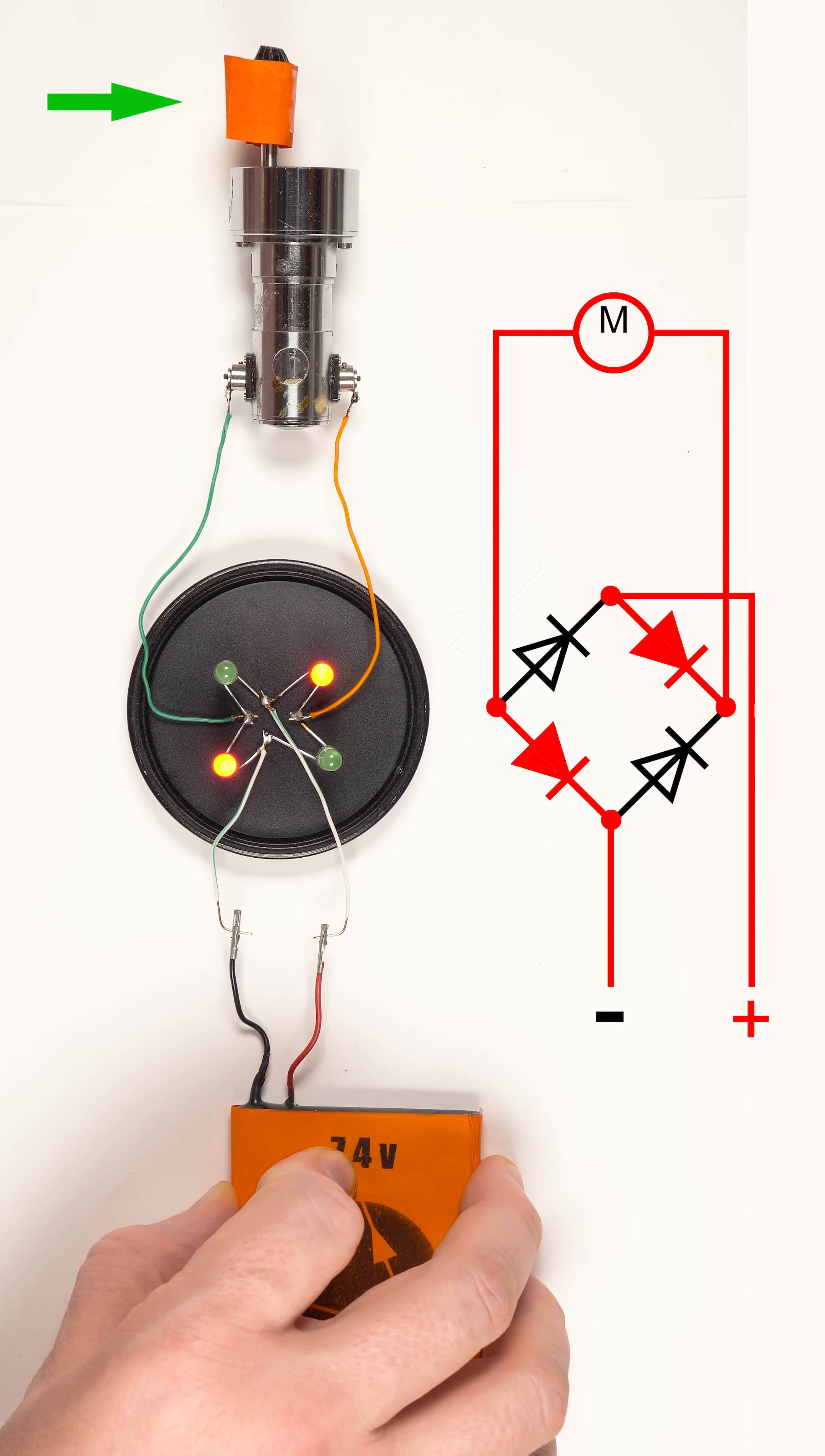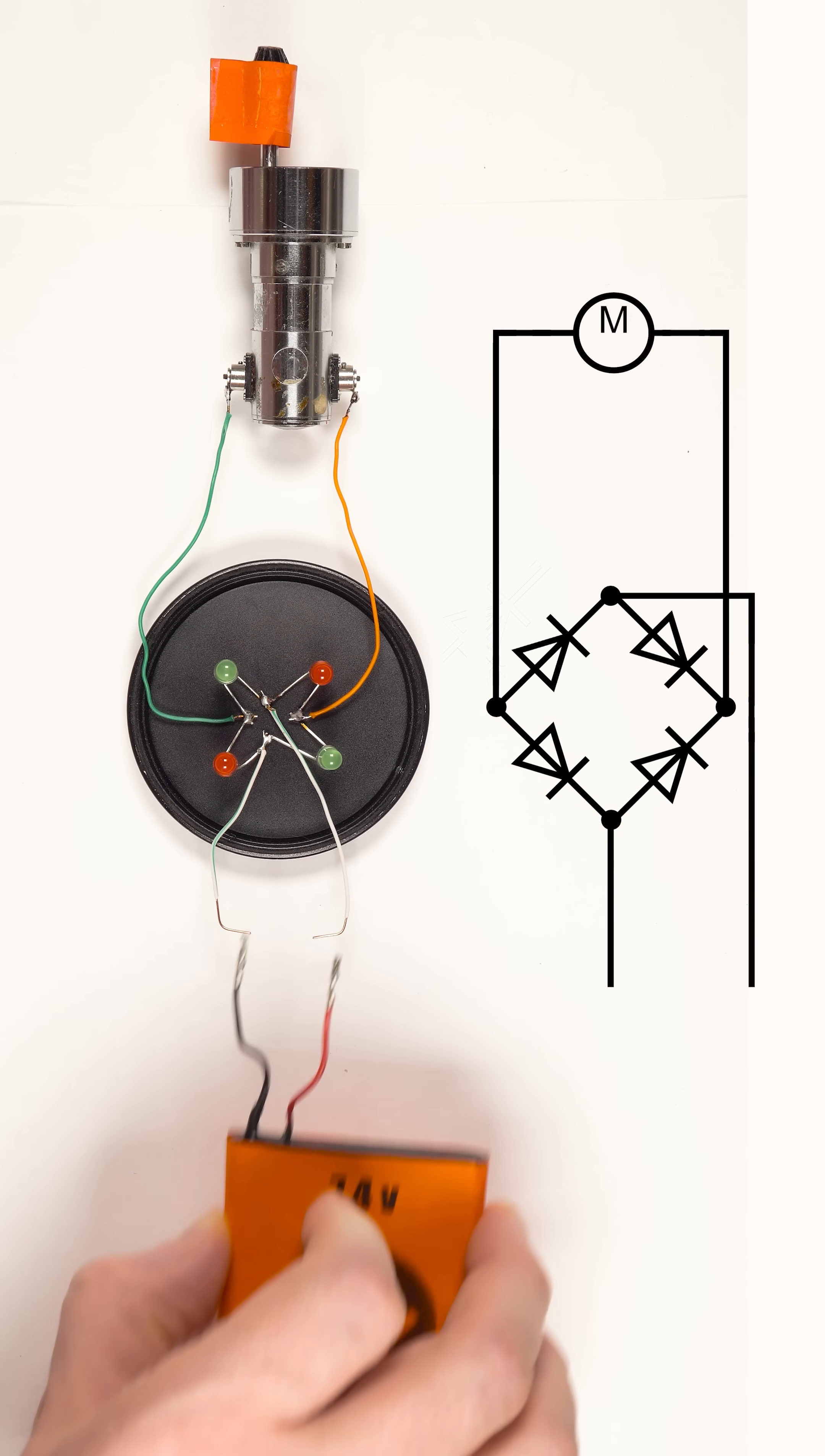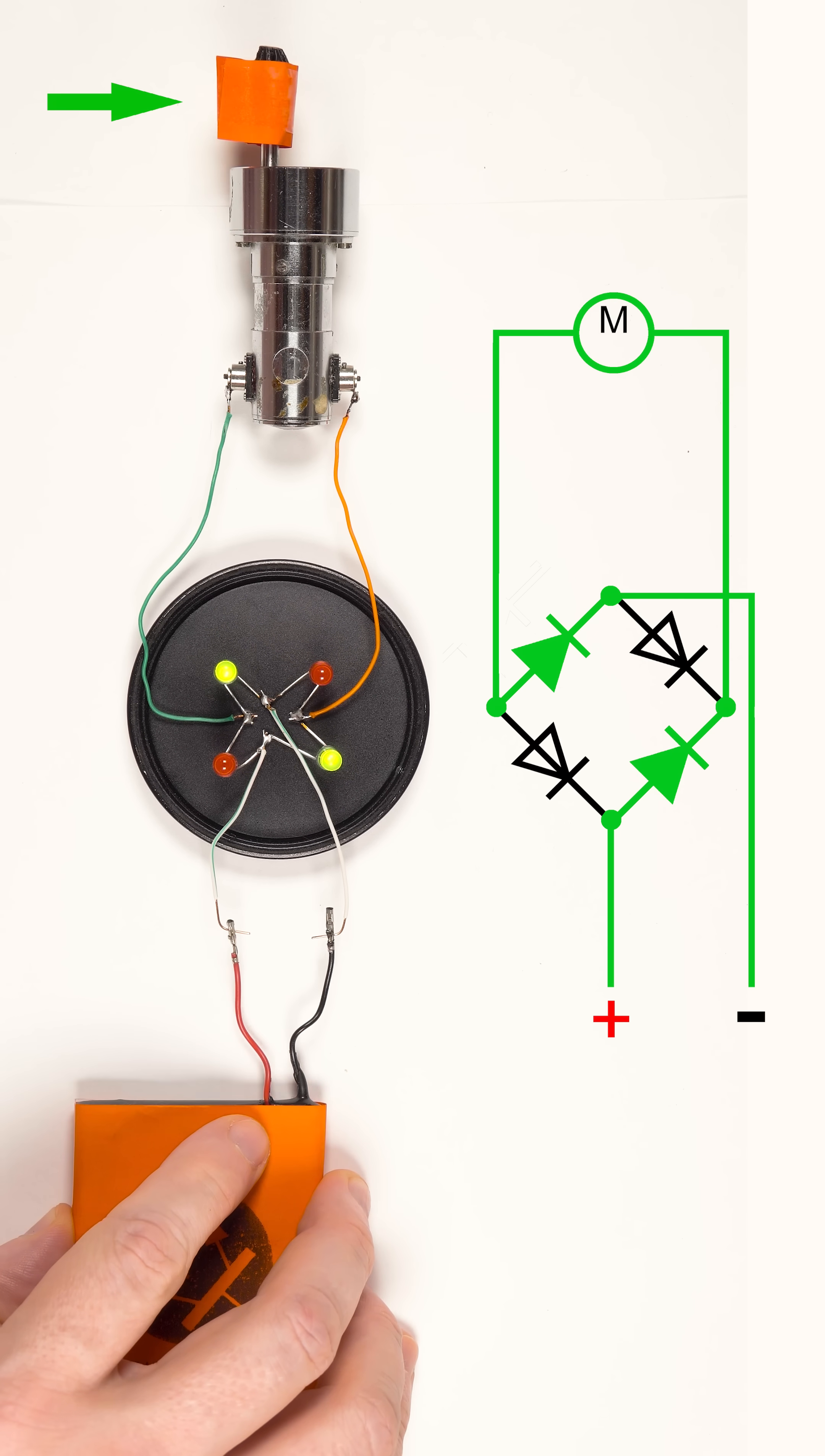So with every flip of a battery, the current takes a different path inside the bridge rectifier, but thanks to the diodes it always ends up in the same polarity as the output.